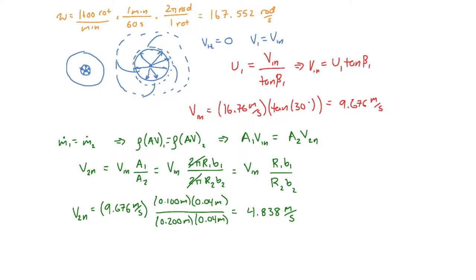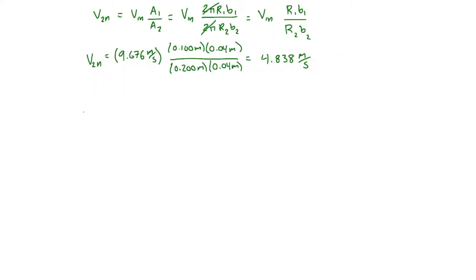So our next goal, to find the power required, we have to find the flow rate through the pump. You can analyze the flow rate either at the inlet or outlet. It doesn't matter because it remains constant throughout the pump. We could say that the volumetric flow rate is the same as a1 v1 normal. So we just simply plug this in. This is going to be 2 pi r1 b1 times v1 normal. We plug in these values to get the volumetric flow rate going through the pump. The flow rate ends up being 0.243 meters cubed per second.